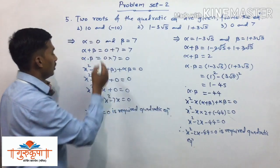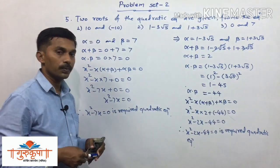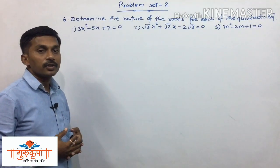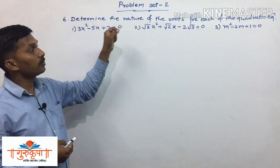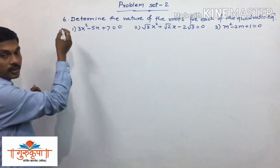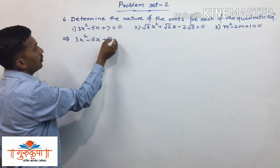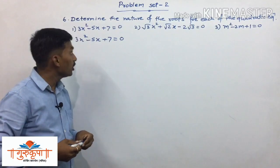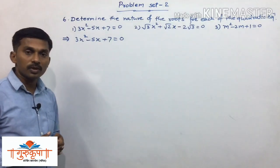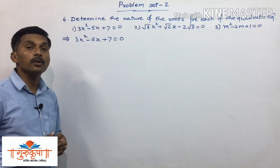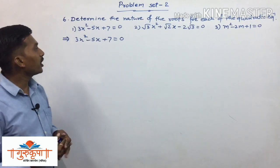This is all about question number 5. Now we will solve question number 6: determine the nature of the roots of the quadratic equation. Three quadratic equations are given. The nature of the roots depends upon the value of b squared minus 4ac, the discriminant.